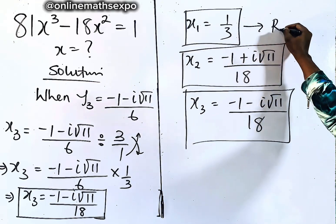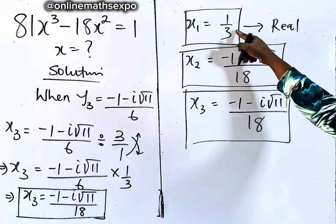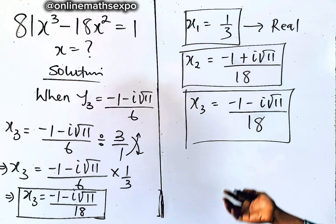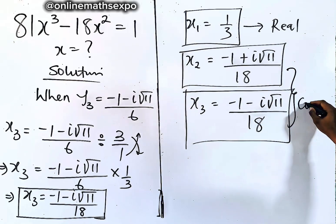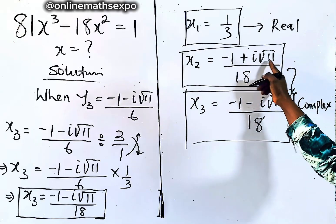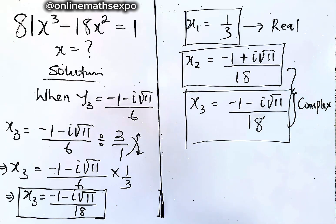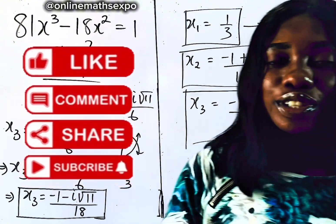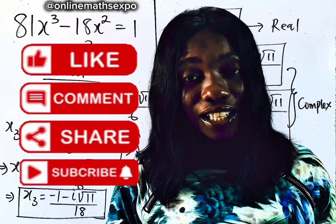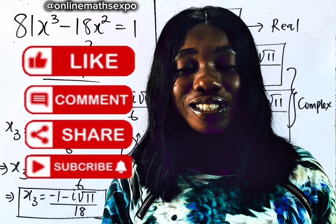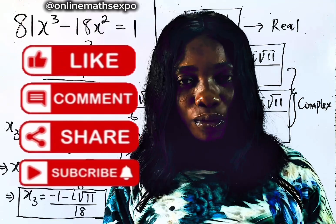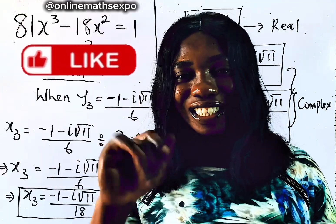Now these two values of x — the first one is the real value because there is no imaginary part and it can be found on the number line. These other ones are the complex solutions because they contain both real and imaginary parts. I hope you really learned something today. If you did, don't forget to give this tutorial a thumbs up, share with your friends, and if you are still new, hit that subscription button. Feel free to ask questions in the comments — see you in my next class, bye.